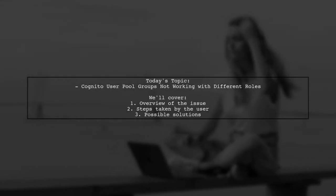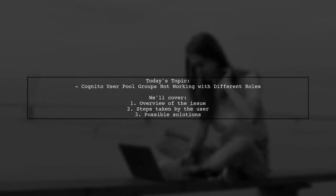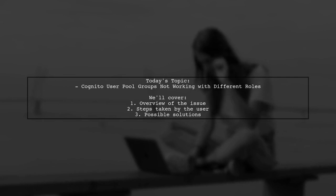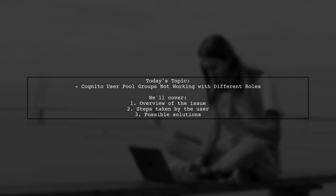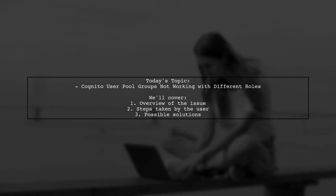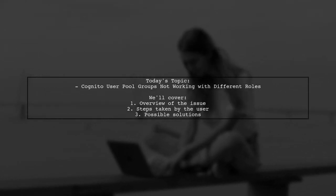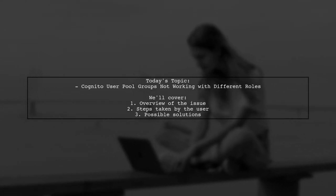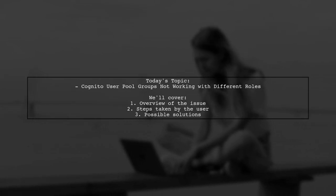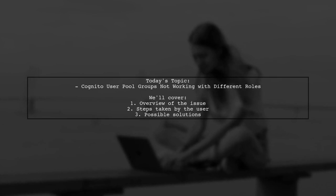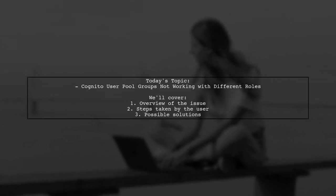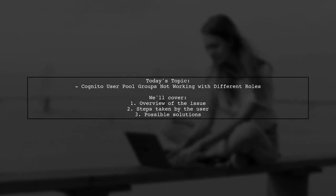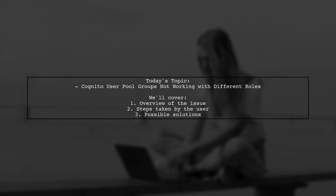Welcome to our Tech Explainer video. Today we're tackling a challenge that many developers encounter when working with AWS Cognito. Our viewer is trying to implement user permissions in their web application, but they're facing issues with Cognito user pool groups not functioning as expected with different roles. Let's dive into the details of their situation.